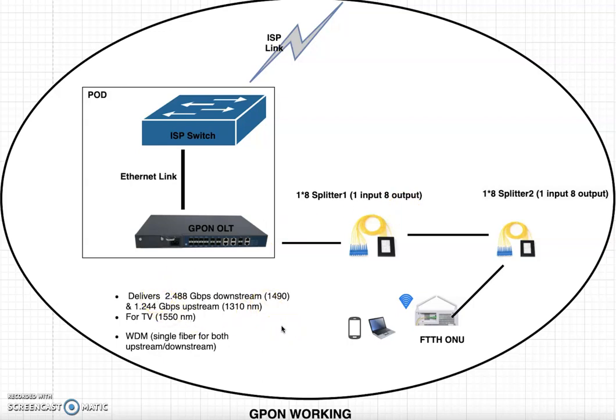If you are using TV services, a wavelength of 1550 nm can be used. This is a short description about the working principle of GPON technology.